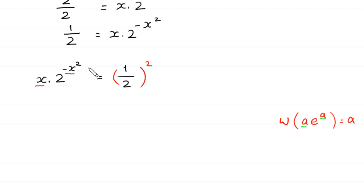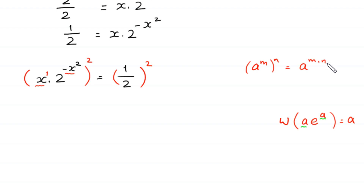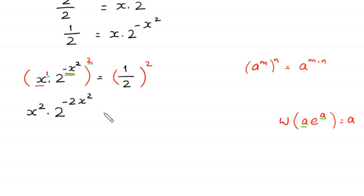This x has power 1, so according to the property (a^m)^n = a^(m times n), we multiply the power 1 by 2 and the power negative x squared by 2. This expression becomes x squared times 2 to the power negative 2x squared is equal to 1 over 4.